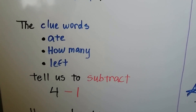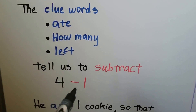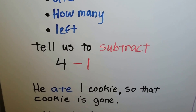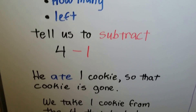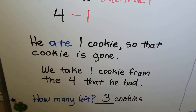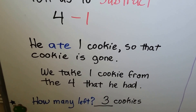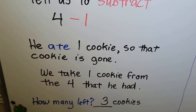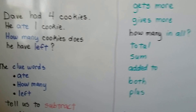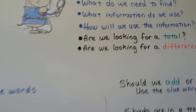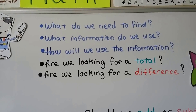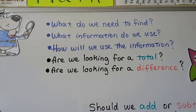Those clue words tell us to subtract. He had four cookies, he ate one, so that cookie is gone. We take one cookie from the four that he had. How many left? Three cookies. We use subtraction — he ate one, it went away.